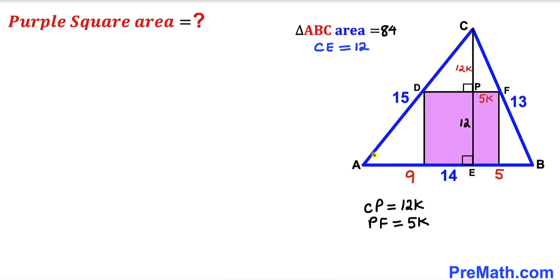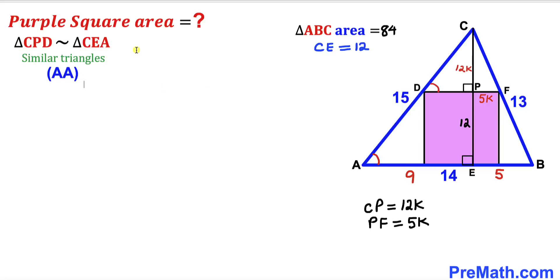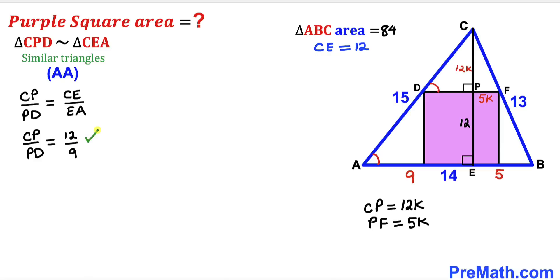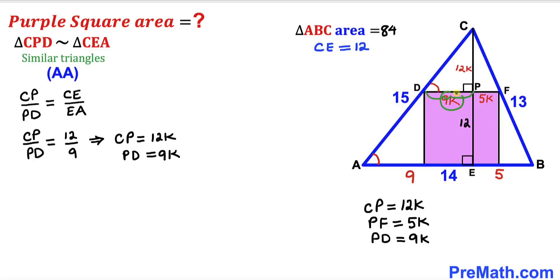Similarly, the corresponding angles are congruent, so right triangle CPD is similar to right triangle CEA by the Angle-Angle similarity theorem. Setting up proportions: CP divided by PD equals CE divided by EA, which is 12 over 9. Since CP = 12k, it follows that PD = 9k.